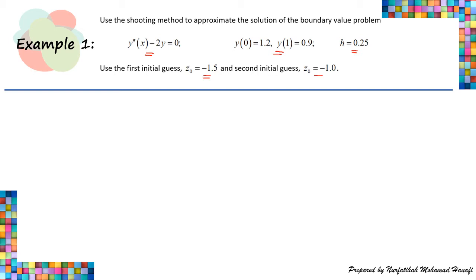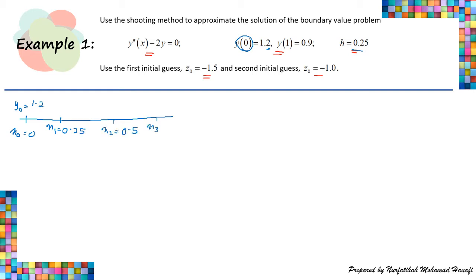First, let's set up our number line. We start with X₀ = 0, where Y₀ = 1.2. With increment h = 0.25, we have X₁ = 0.25, X₂ = 0.5, X₃ = 0.75, and X₄ = 1.0. Since the boundary condition gives Y(1) = 0.9, that means Y₄ = 0.9. We need to find the values for Y₁, Y₂, and Y₃.